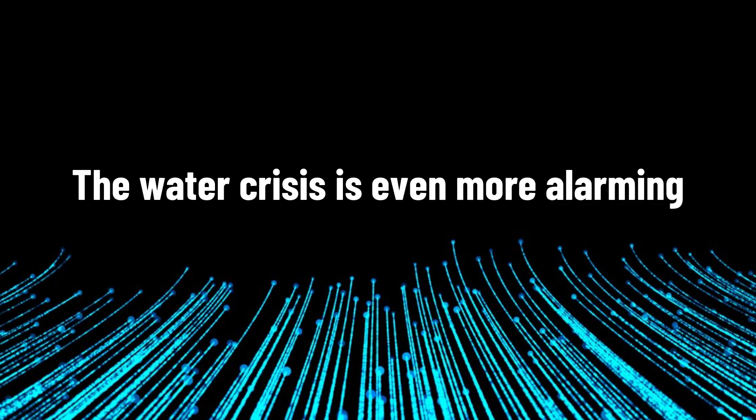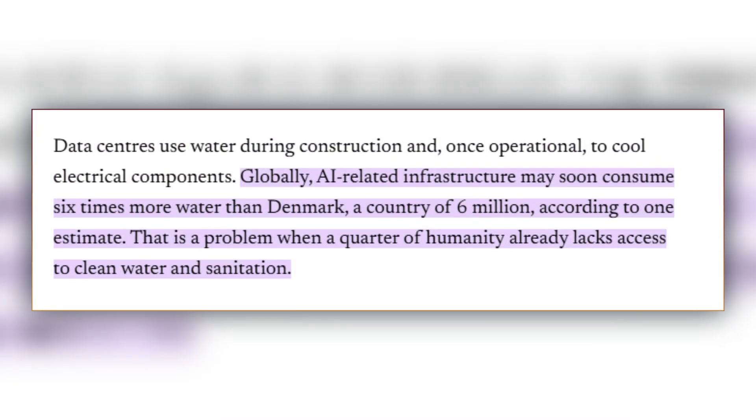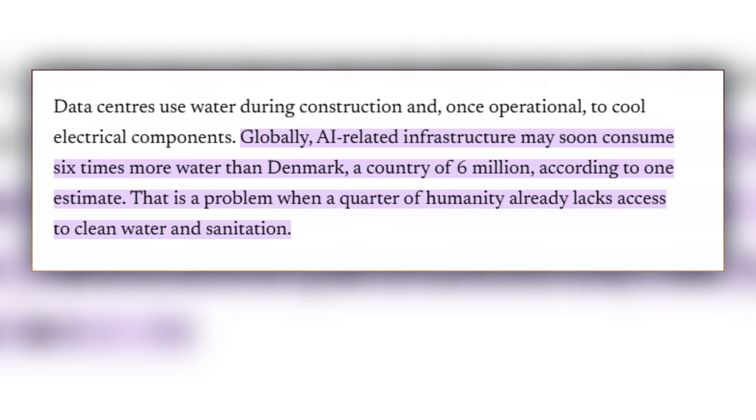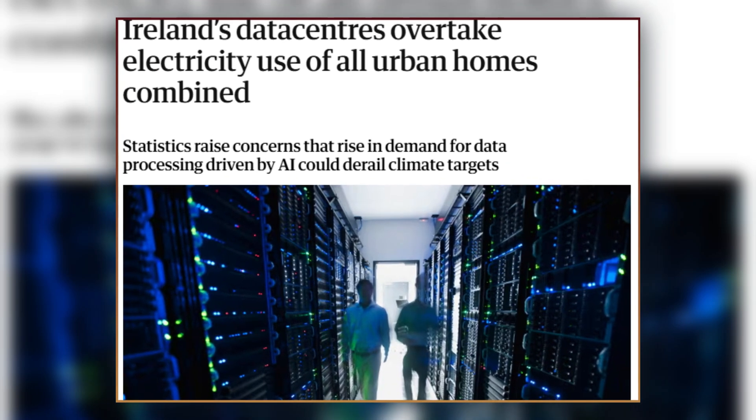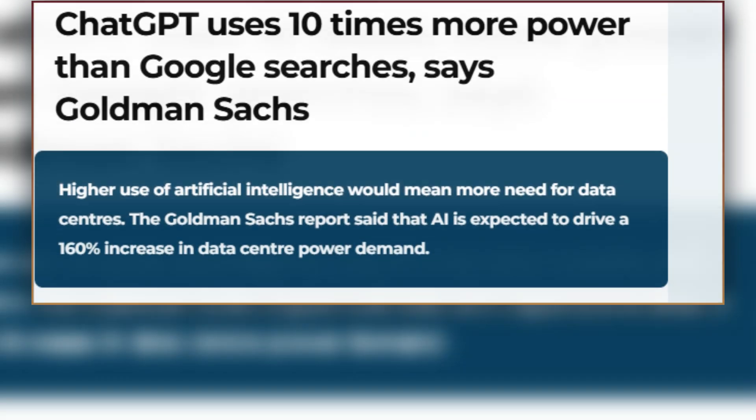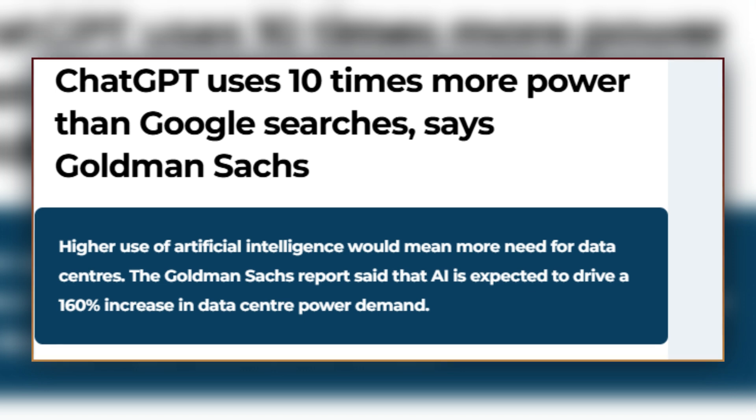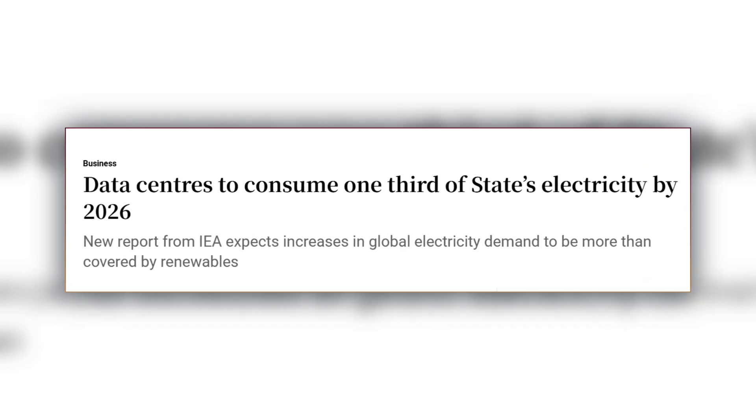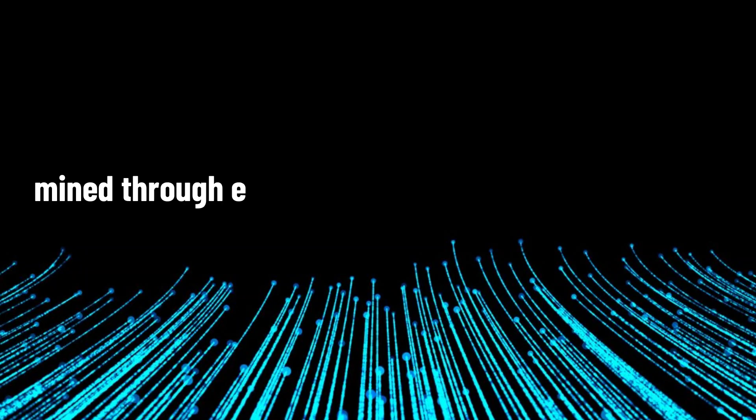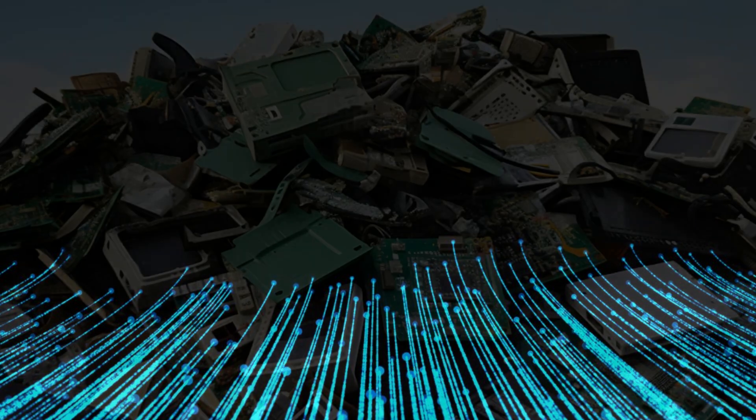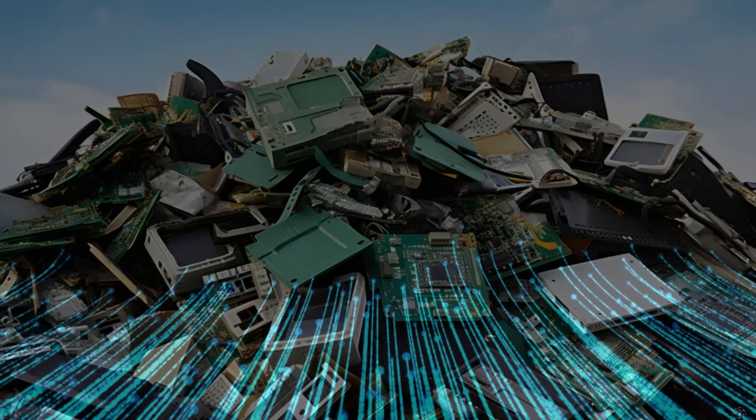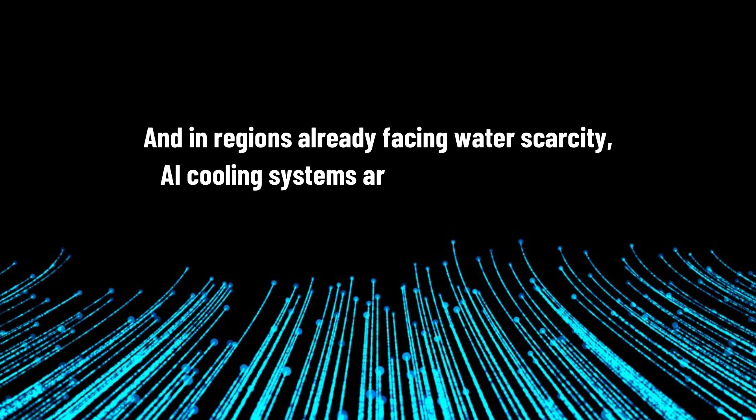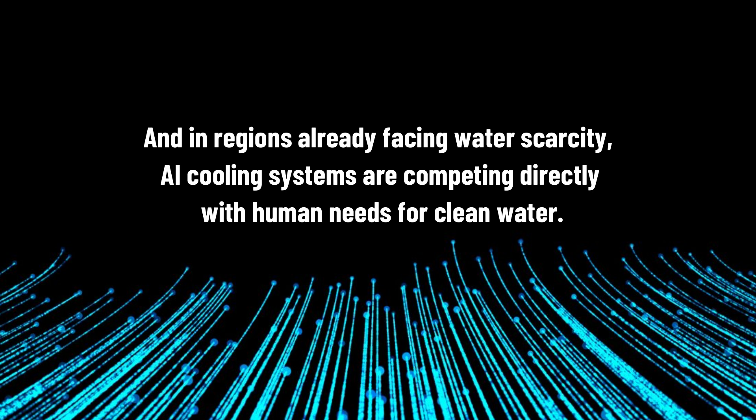The water crisis is even more alarming. AI systems now consume six times more water than Denmark, a country with 6 million people. In tech hubs like Ireland, data centers will consume 35% of the nation's entire energy grid by 2026. To put this in perspective, a single ChatGPT query uses 10 times more energy than a Google search. The environmental toll is mounting. These data centers require critical materials and rare elements, often mined through environmentally destructive methods. Each center produces significant electronic waste containing hazardous materials like mercury and lead. And in regions already facing water scarcity, AI cooling systems are competing directly with human needs for clean water.